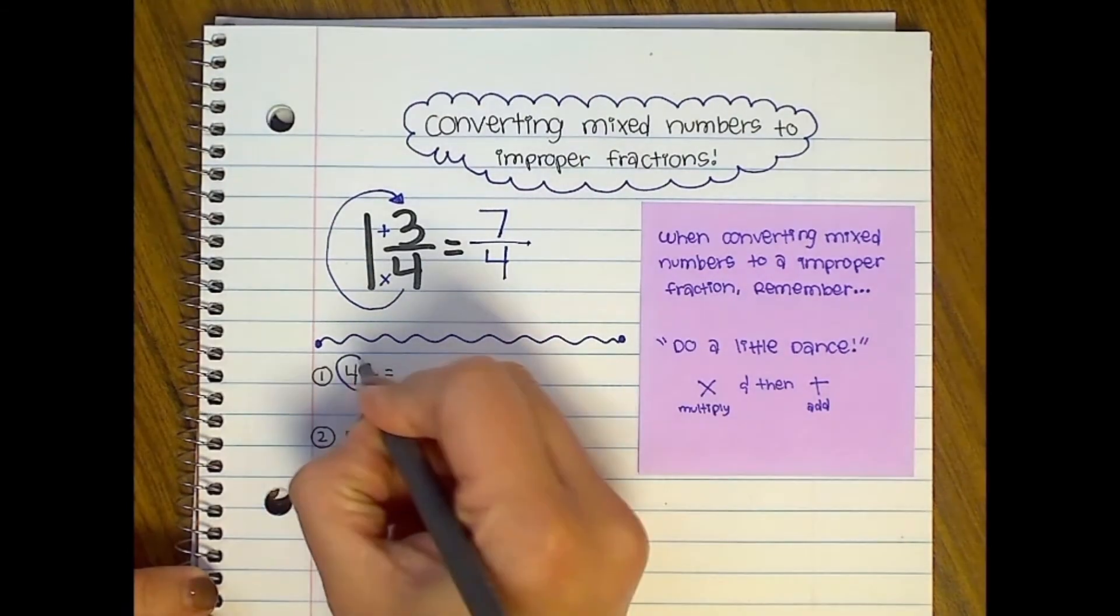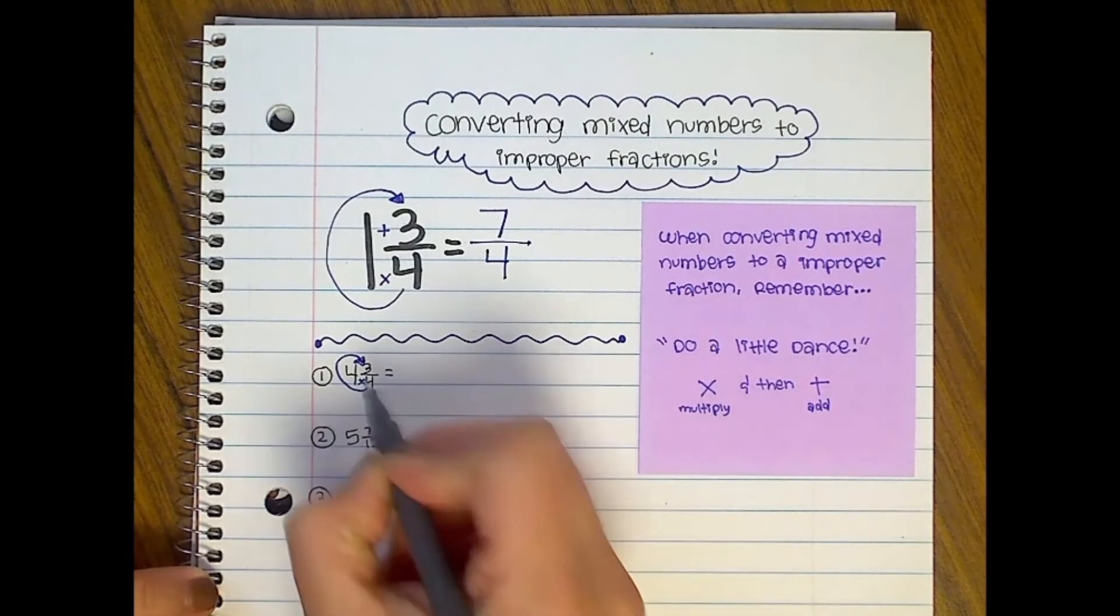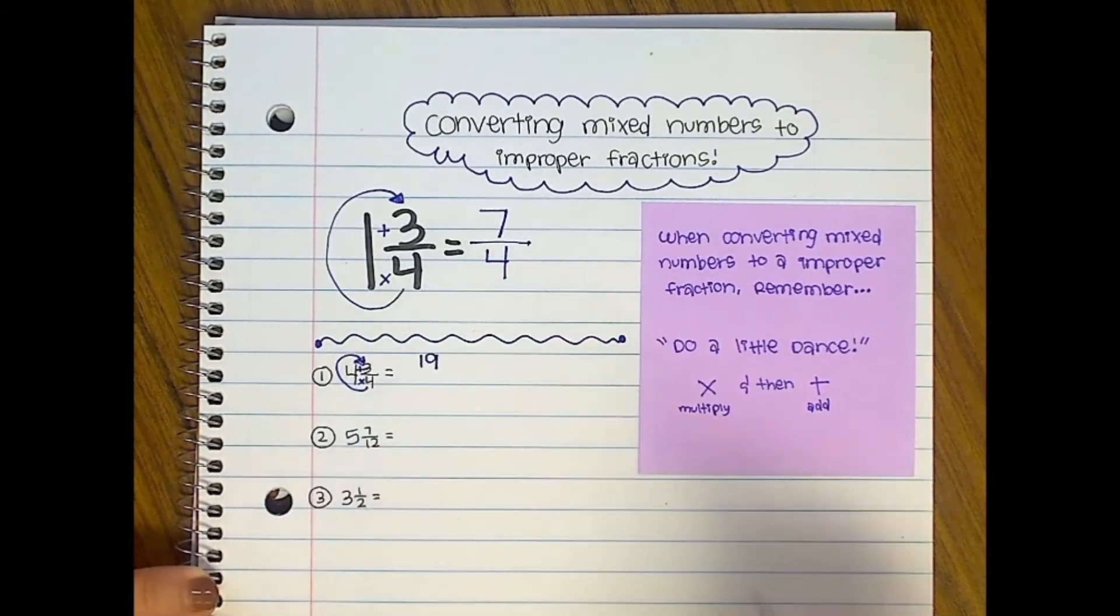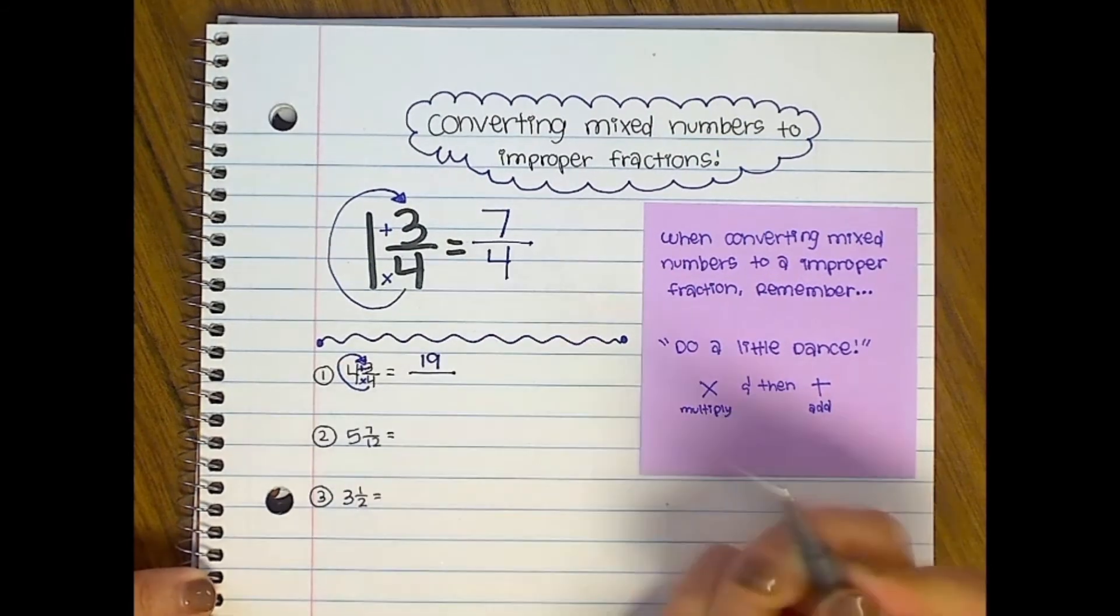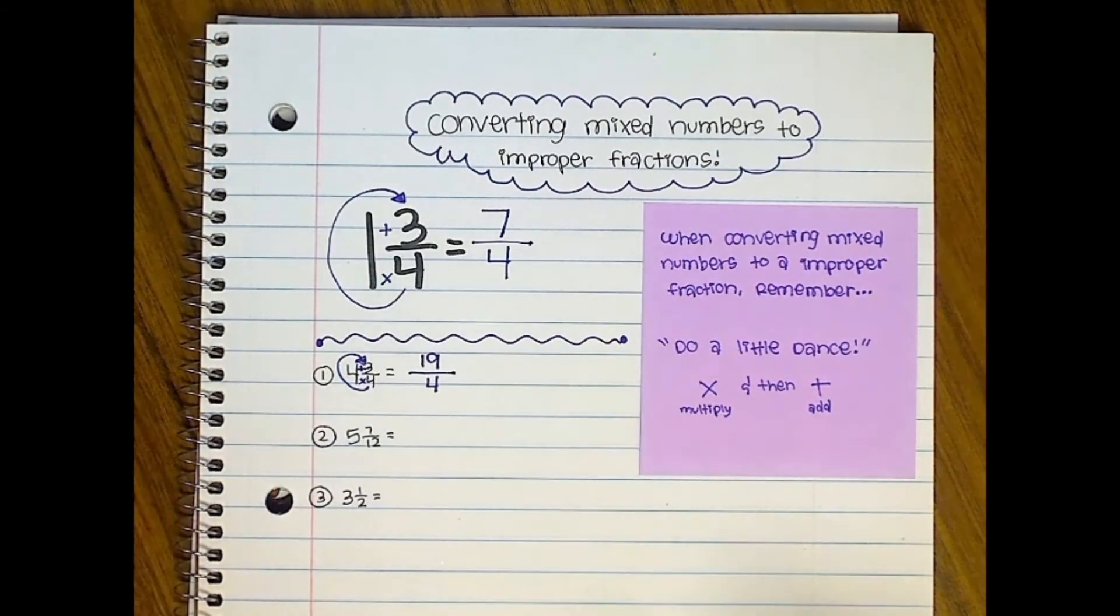We do a little dance here. You do four times four, which is 16, plus three, which is 19. Then the denominator is going to be four, just like it is over here because the denominator always stays the same.